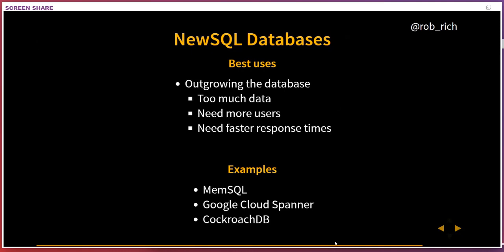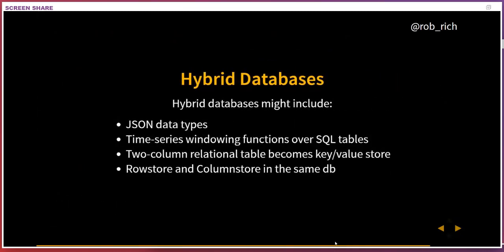Hybrid databases take SQL and combine it with something else. Many databases are moving in this hybrid approach — a SQL database with a JSON column makes it also a NoSQL database, extending SQL capabilities to query into that JSON data. Or adding time series windowing functions to a primarily SQL database. We're also seeing NoSQL databases that also support SQL, or distributed databases adding other features. Hybrid databases look great when you want to store some data that is mostly one thing but need a few other capabilities, so you don't need to create a completely separate data store.